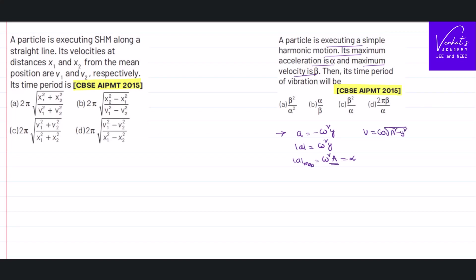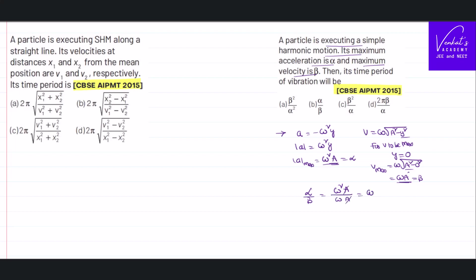Velocity: v = ω·√(a² − y²). For v to be maximum, displacement must be zero, so v_max = ω·√(a²) = aω, and that is called beta. Now, alpha = ω²·a and beta = ω·a. Dividing alpha by beta: (ω²·a)/(ω·a) — the a's cancel — giving alpha/beta = ω.